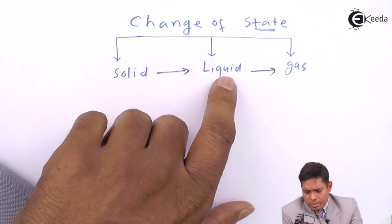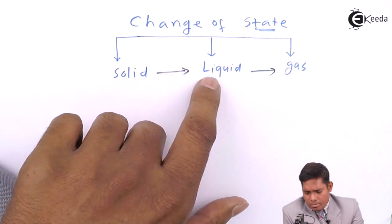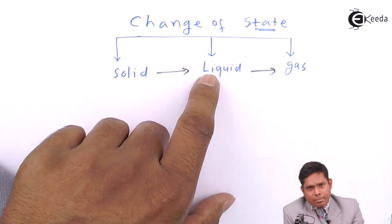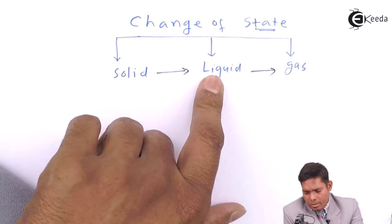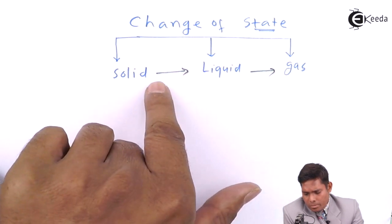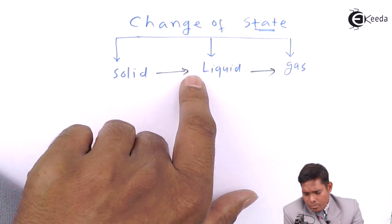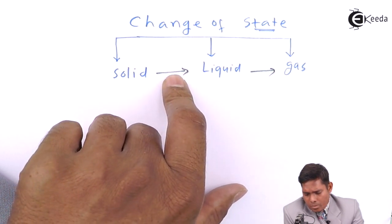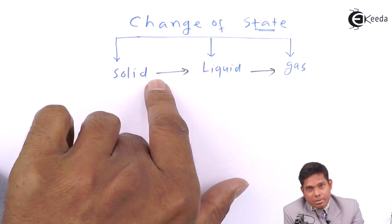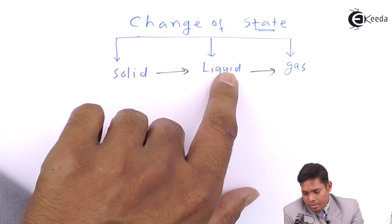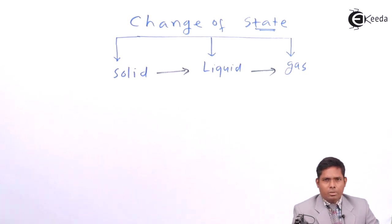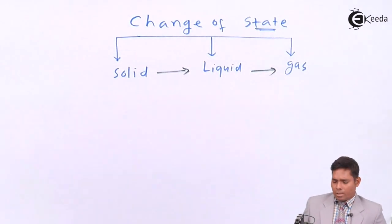When solid is converted to liquid, it is called melting. When liquid is converted to gas, it is called vaporization. So we have the melting of solid and the vaporization of liquid.